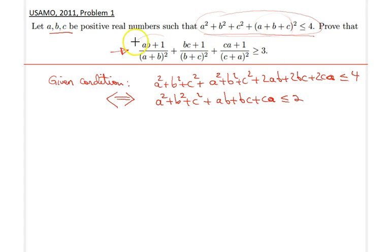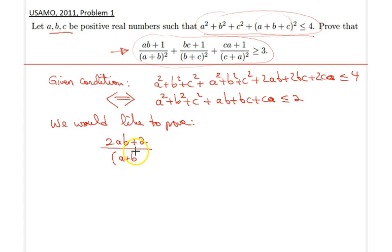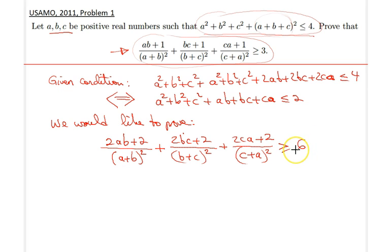So remember, we would like to show this inequality here. What I will do is I will simply multiply both sides of this inequality by 2. So therefore, we would like to prove that in fact, 2 times ab plus 2 divided by a plus b squared plus 2 times bc plus 2 divided by b plus c squared plus 2 times ca plus 2 divided by c plus a squared is greater than or equal to 6. And the reason I did that, meaning I multiplied both sides by 2, is to make use of this inequality here, substitute it for the values of 2 here.